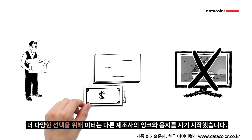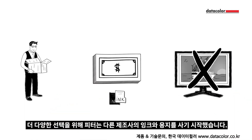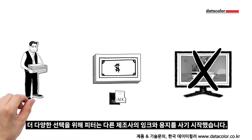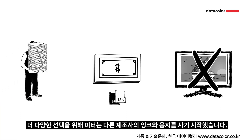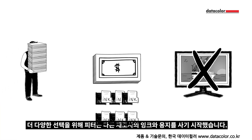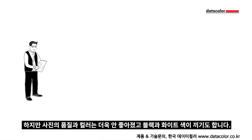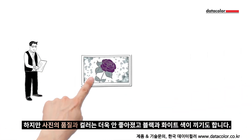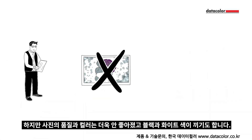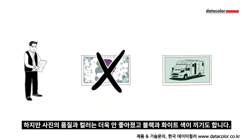The manufacturer's products were expensive too, and they only had a limited choice of paper types. To get more options, Peter started buying paper and ink from other manufacturers. But now the colours and quality of his prints are even worse, and his black and white prints are not neutral.